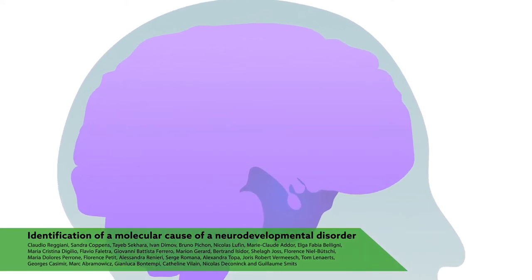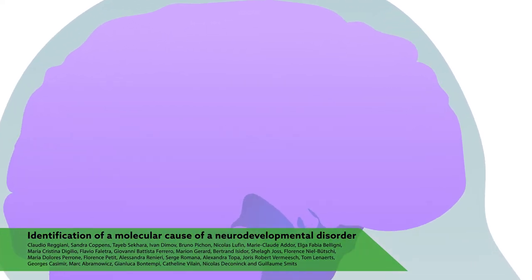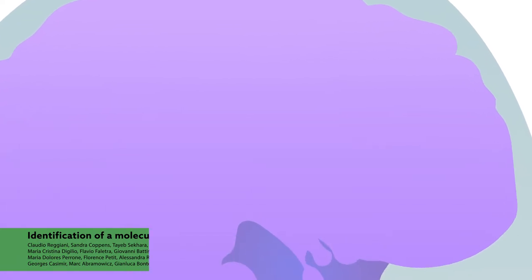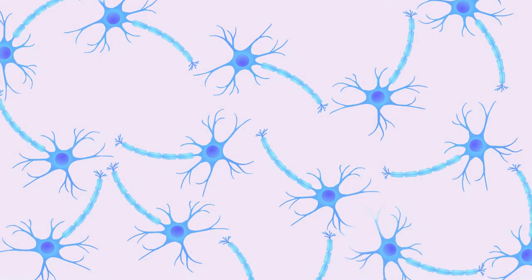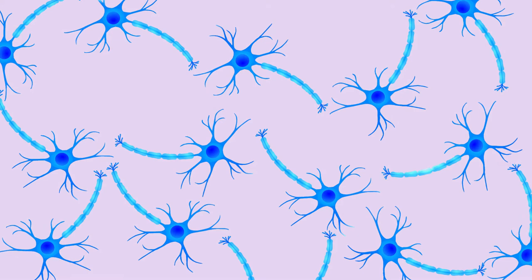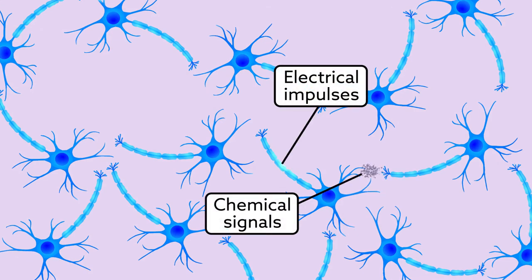The brain is the most complex biological structure known. All thoughts, movements and behaviours are coordinated in this control centre, where information is processed and transmitted in the form of electrical impulses and chemical signals.